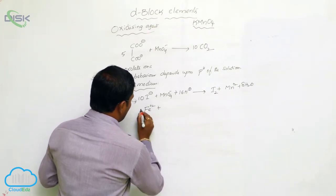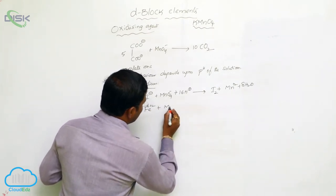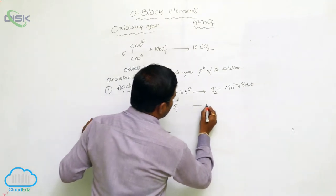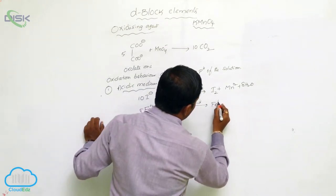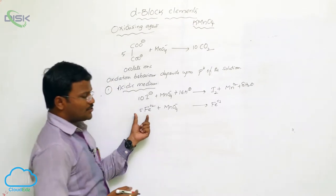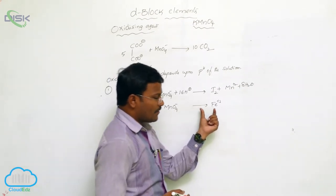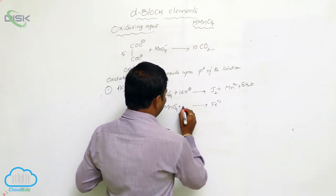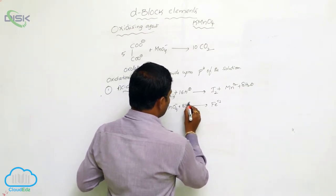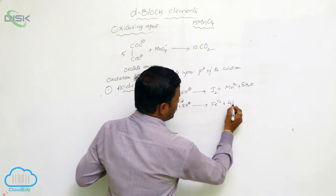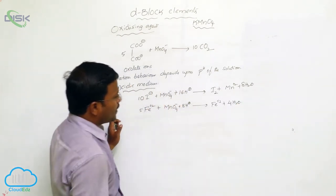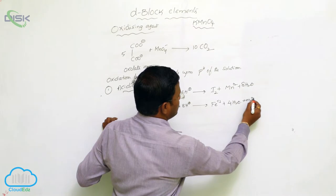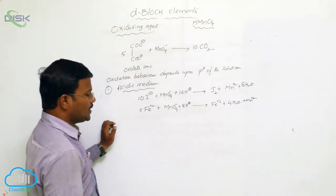Similarly, in the same acidic medium, permanganate ions can also oxidize ferrous ions into ferric ions: Fe²⁺ is oxidized to Fe³⁺, with the use of 8H⁺ to produce 4H₂O and with the formation of Mn²⁺ ions.